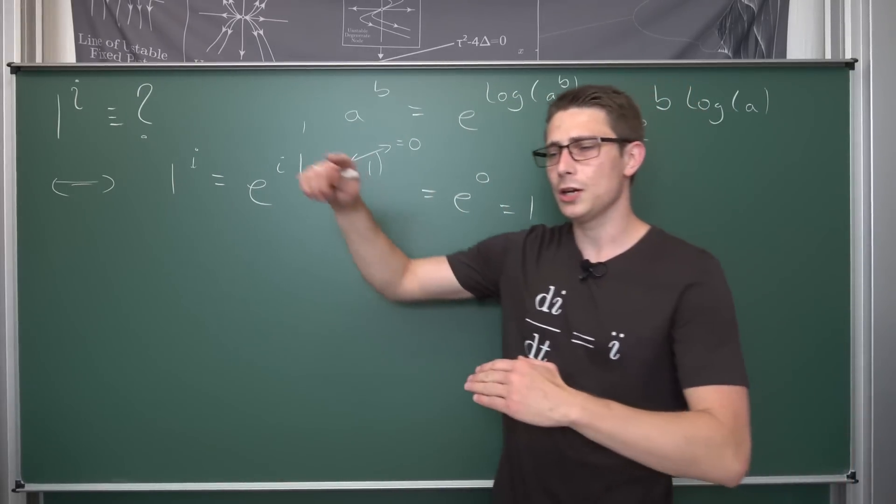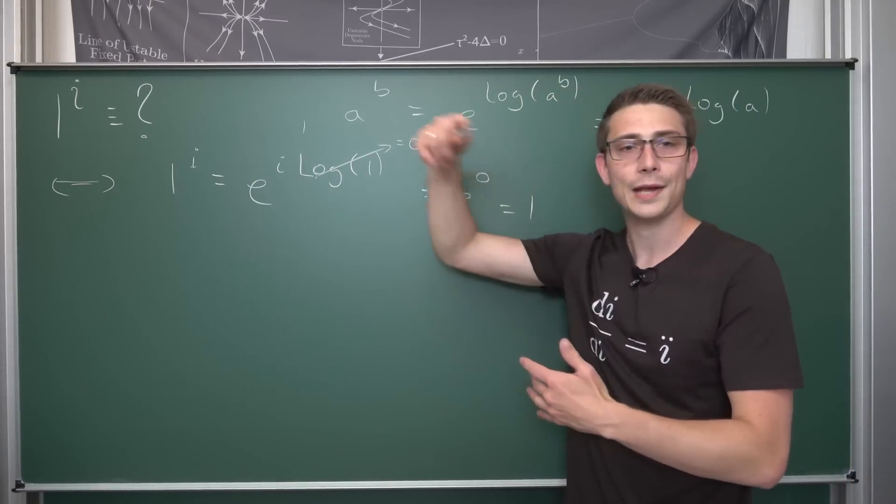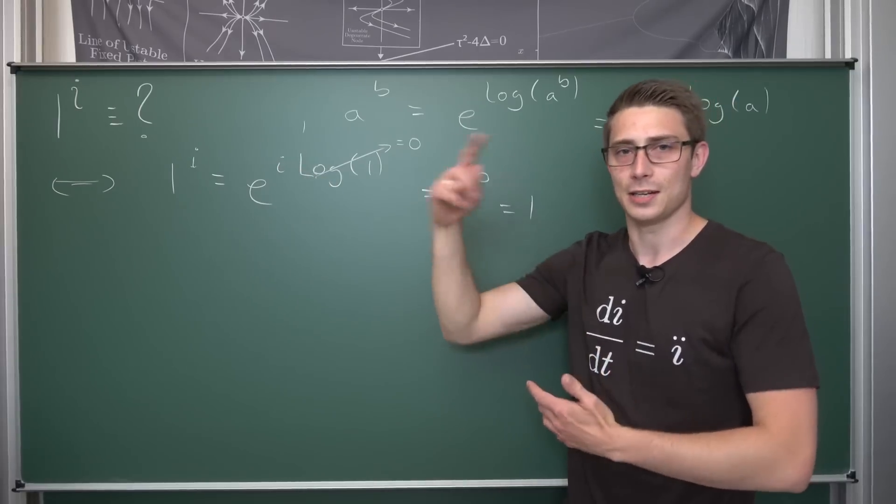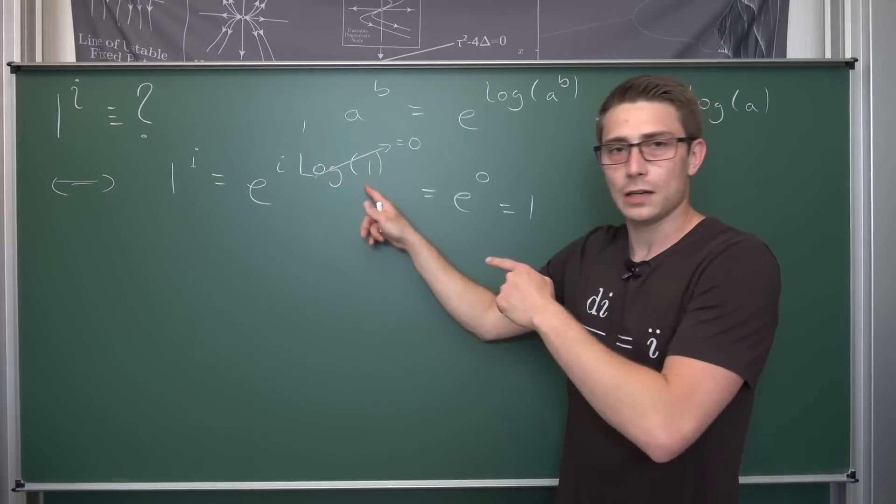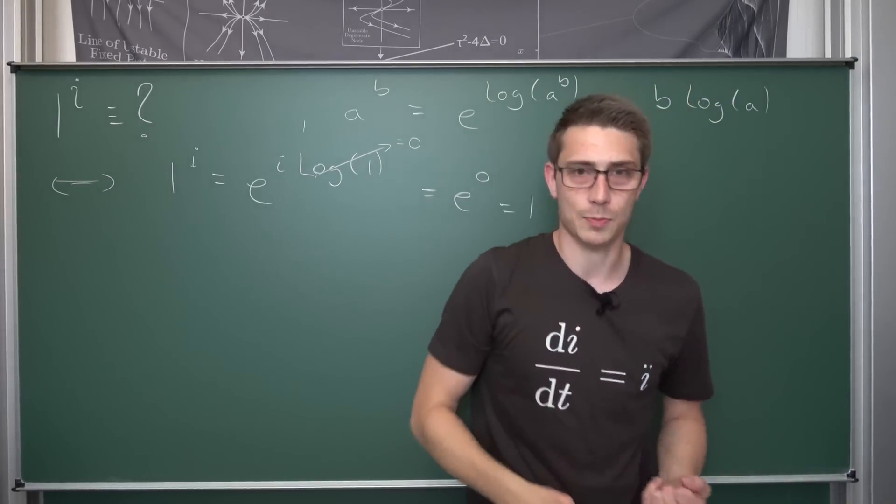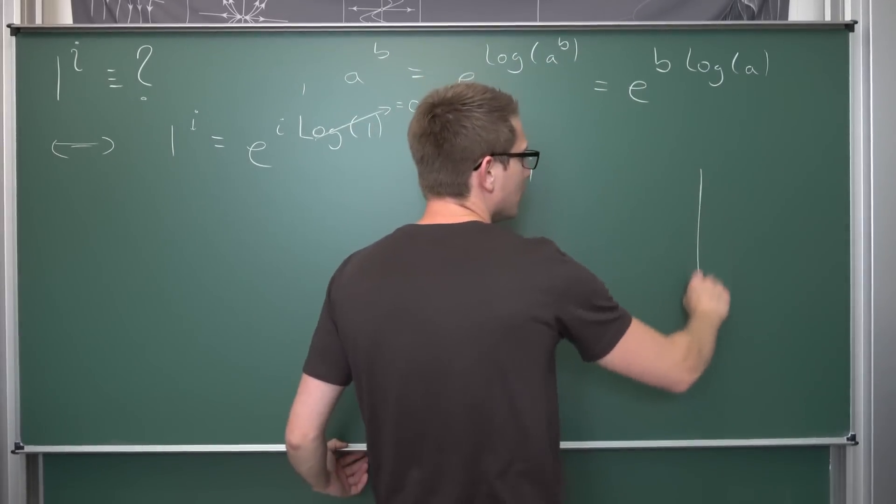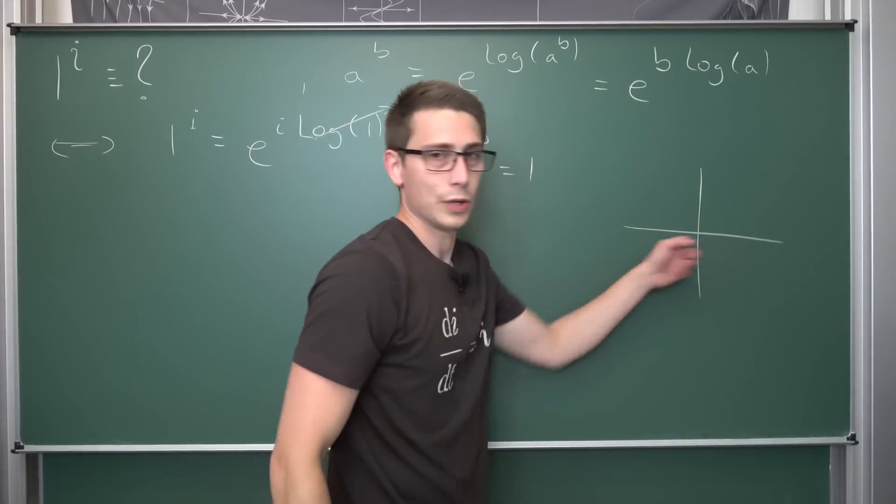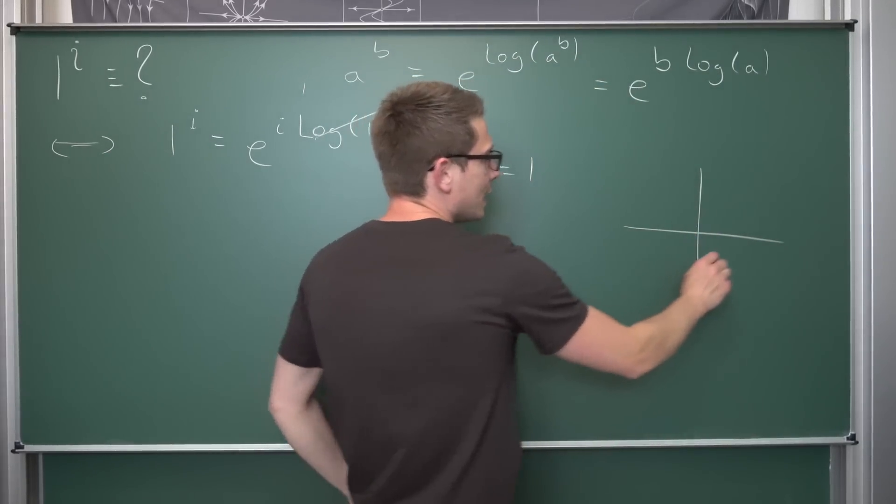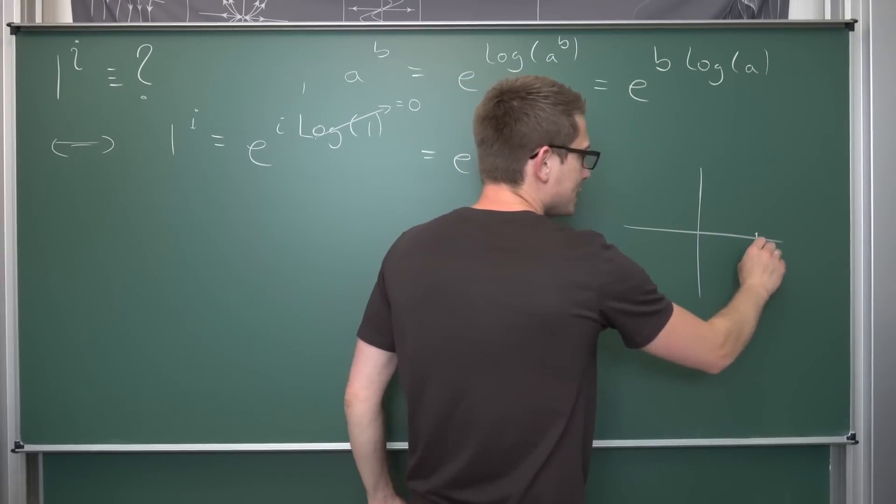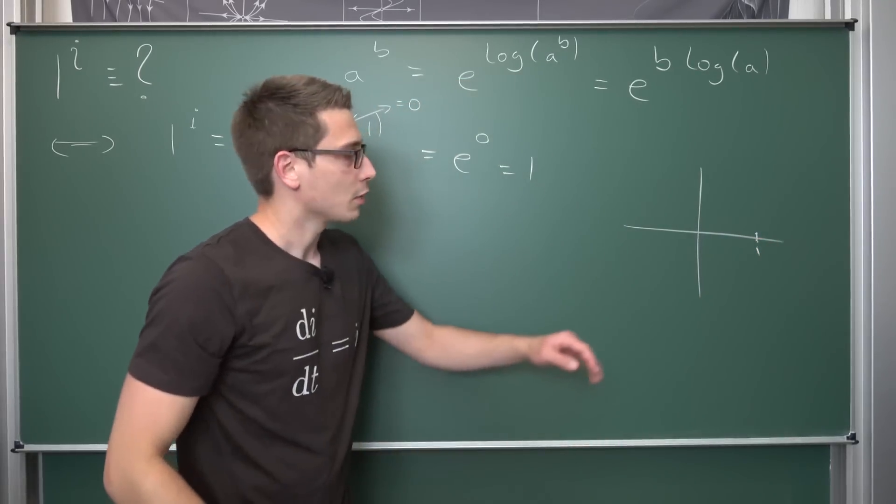But what happens if we go around a few more times on the complex spiral, you could say, in the complex plane? Because if we take a look at the number 1 in the complex plane as a complex number, then this right here is the real axis, that's the imaginary axis, and we start on this side right here, which is going to be 1. Okay, this is good.